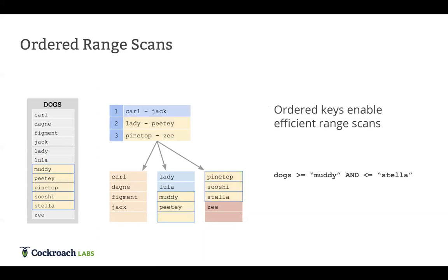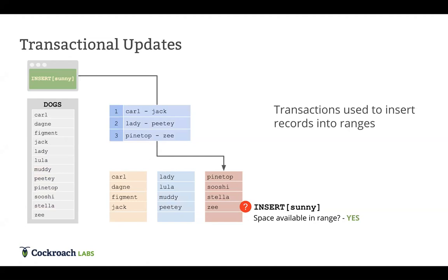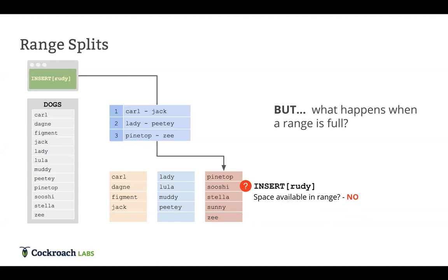Ordering enables efficient range scans. If you want to find all dogs with names between Muddy and Stella, that covers two ranges, and the indexing structure finds them efficiently. Updates to the transactional distributed key-value store are themselves transactional. For example, when inserting the key 'sunny,' we go into the indexing structure, which directs us to the correct range; if there's space available, we insert it. If we then try to insert 'Rudy' and there's no space, the range splits, and the split operation updates the indexing structure via a distributed transaction.